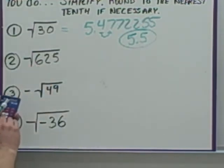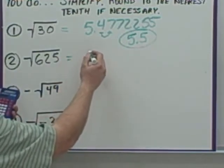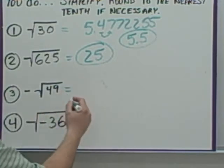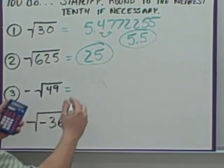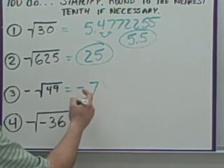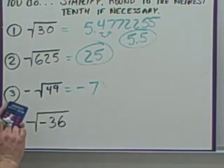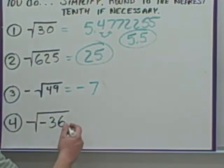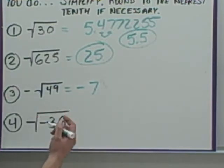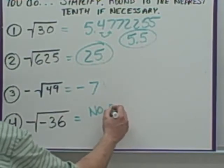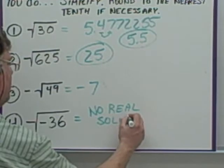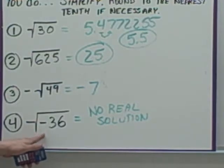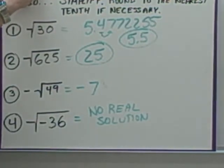For the square root of 625: type 625, hit square root, and you get 25. The negative square root of 49: type 49, hit square root, get 7 — but there's a negative in front, so the answer is negative 7. For the square root of negative 36: if you type in negative 36 and hit square root, your calculator gives an error — because there is no real solution. You cannot take the square root of a negative number.